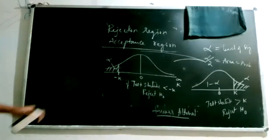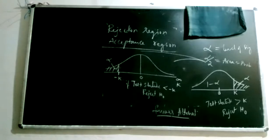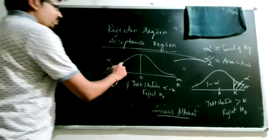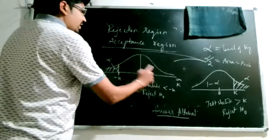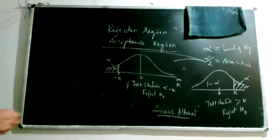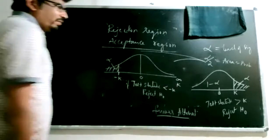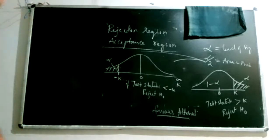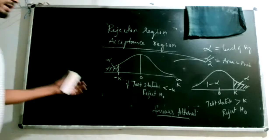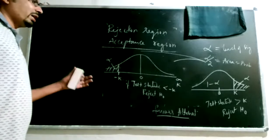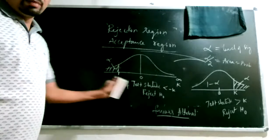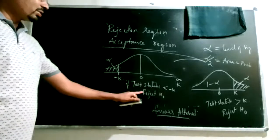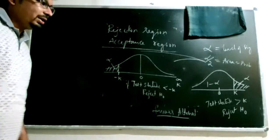This is what we do when the test statistic follows the standard normal distribution. Moreover, for every other distribution — t, chi-square, and F — the hypothesis testing procedure and conclusion are exactly the same.